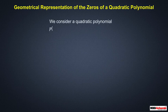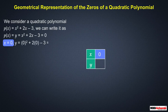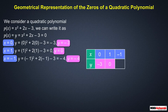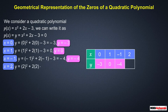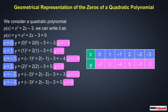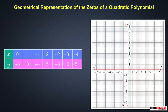Next, we observe the geometrical representation of zeros of a quadratic polynomial. We consider p(x) = x² + 2x − 3, written as y = x² + 2x − 3. We tabulate values: x = 0 gives y = −3; x = 1 gives y = 0; x = −1 gives y = −4; x = 2 gives y = 5; x = −2 gives y = −3; x = −3 gives y = 0; x = −4 gives y = 5. Now we plot the graph of these values.